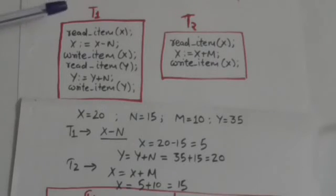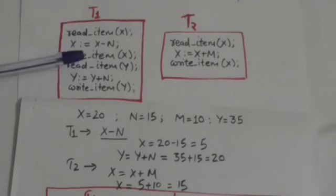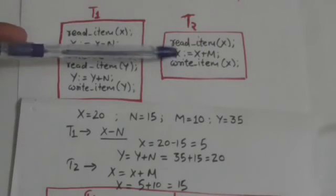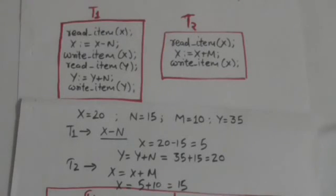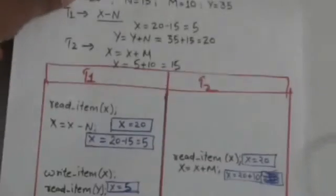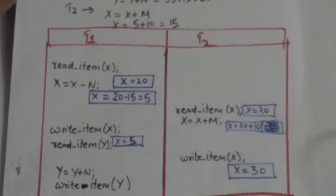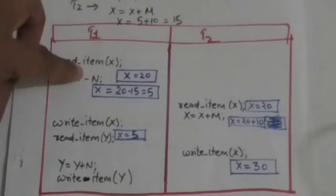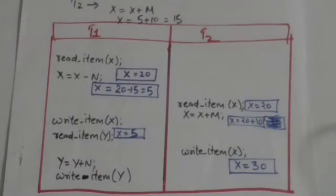Whether T1 is executed first or T2 is executed first, if the schedule is serial the final value of x will be 15, which is the correct result. Now let's look at a non-serial schedule of T1 and T2.